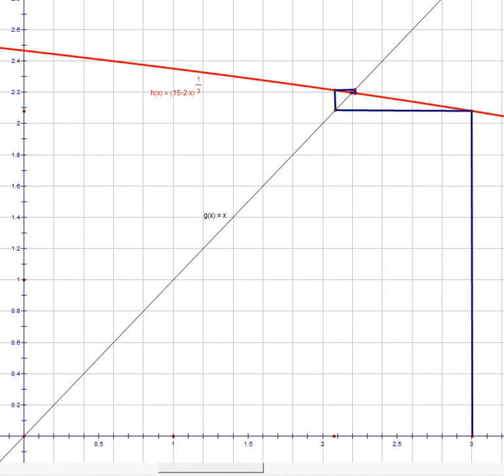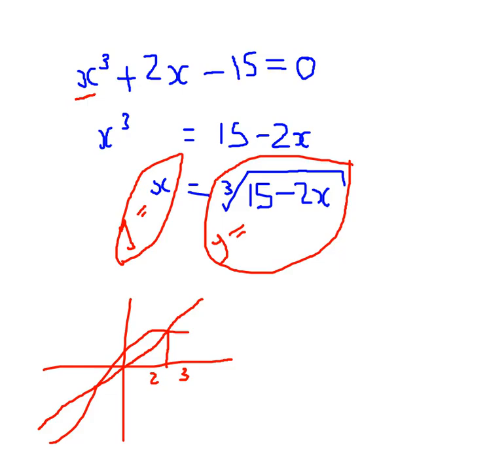So iterative methods. The first thing that we do is we rearrange the equation we're trying to solve to make one of the x's the subject. If we can make all the x's the subject, then we can solve it using algebra, which you can't do with this.